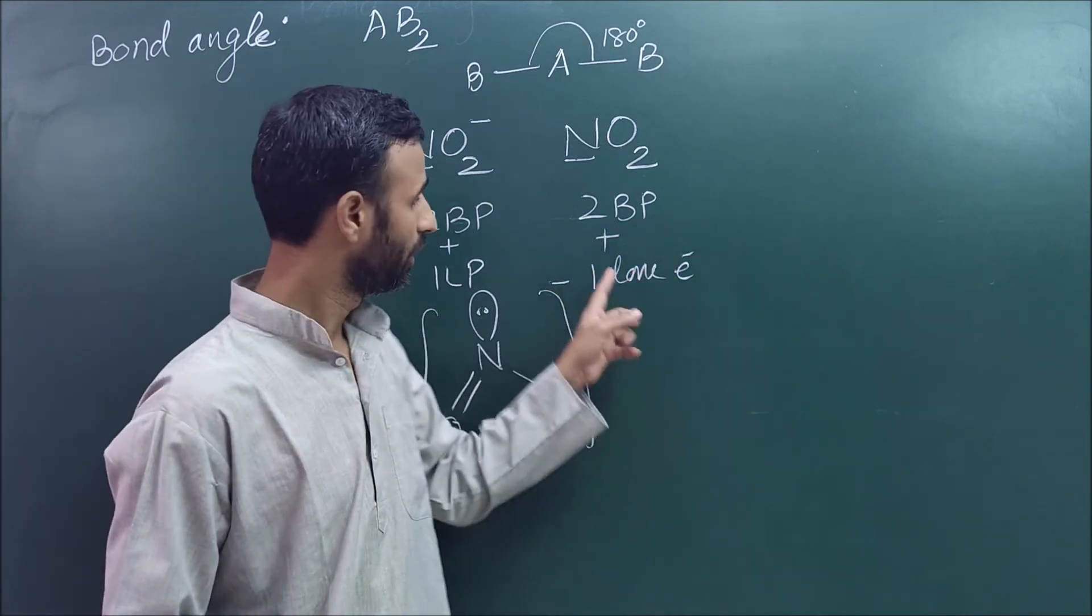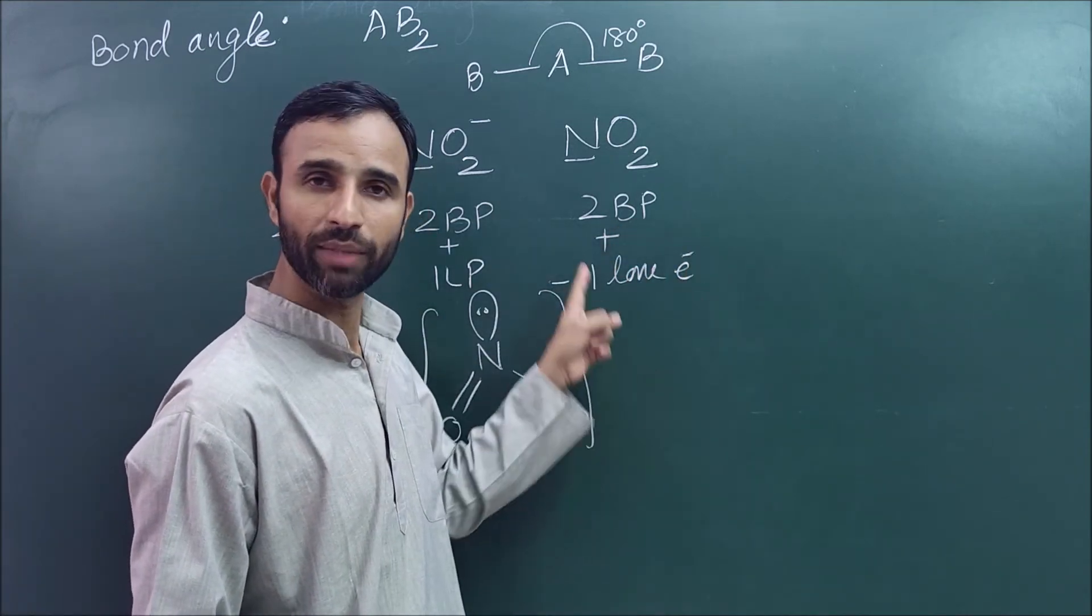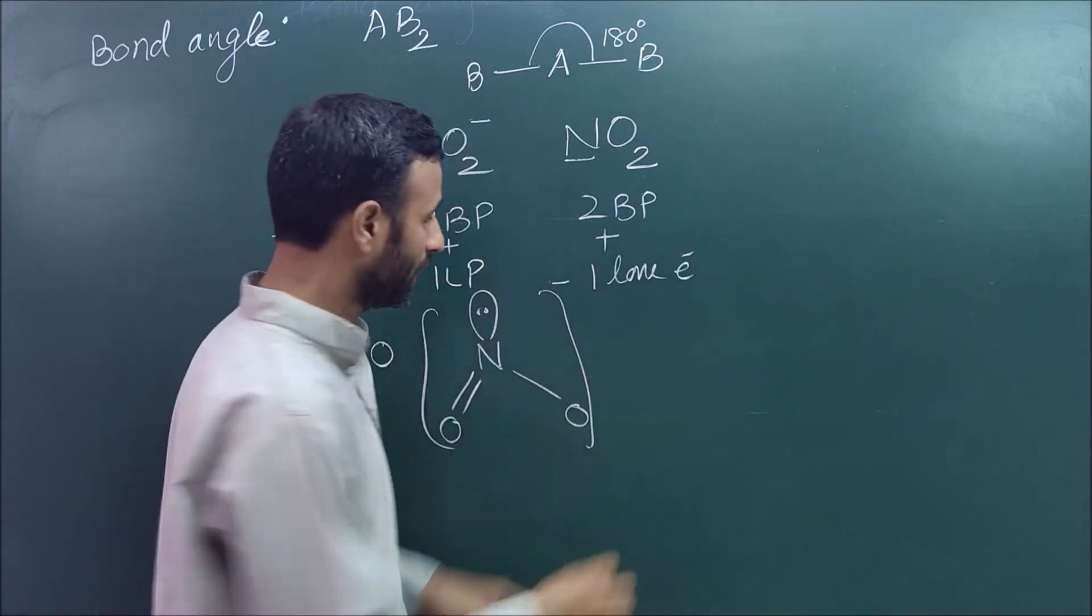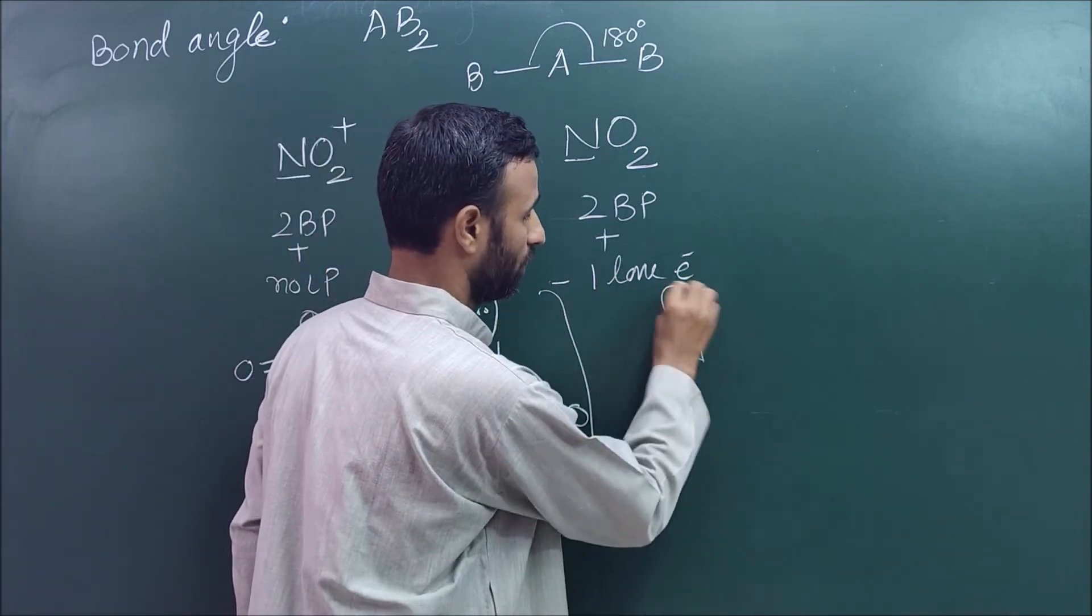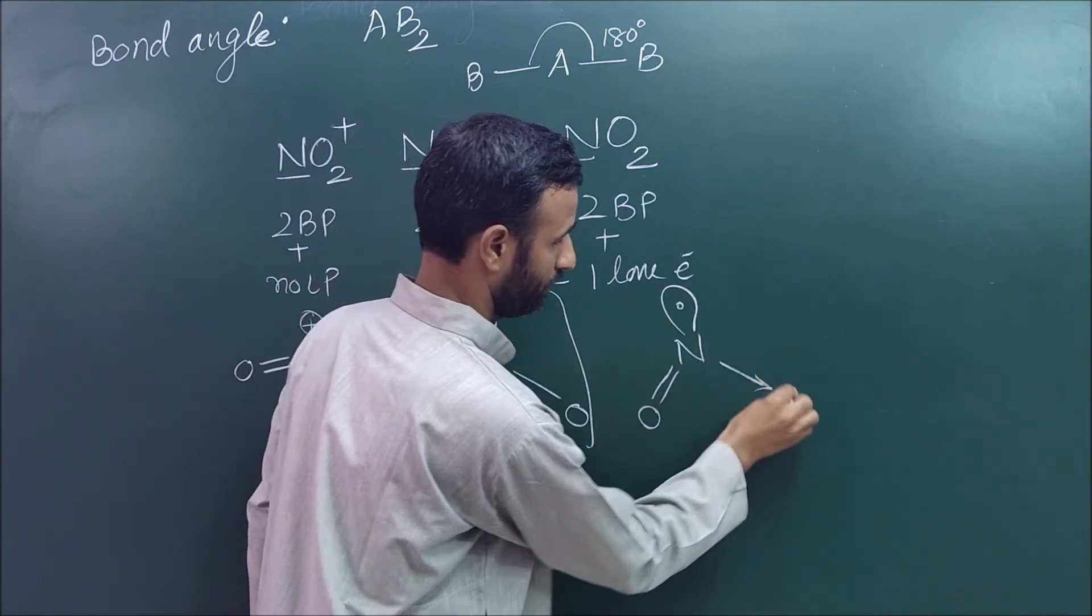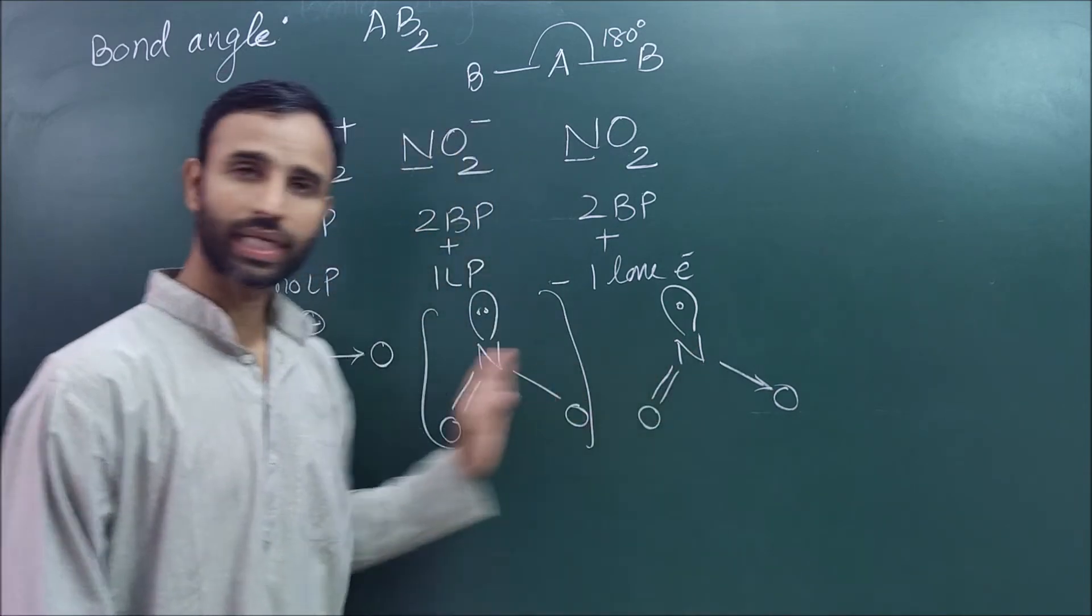In this case, it occupies three positions, but one position is occupied by unpaired electron. So there is one electron.